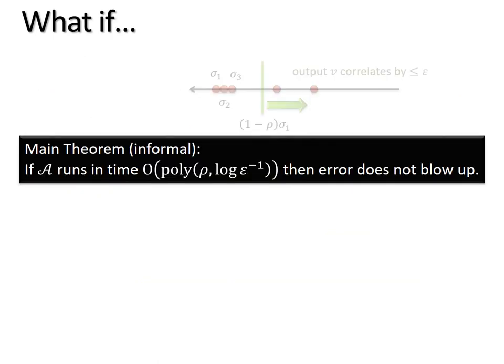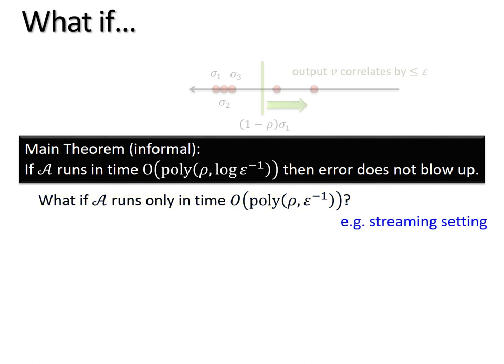Finally, let me ask, what if my favorite algorithm A runs only in a time that's polynomial with respect to 1/(ρε), but not poly logarithmic? This, by the way, is indeed the case in the streaming setting, because if you don't have the data matrix offline, you only have it coming one by one in a streaming setting, then you cannot hope to get a very accurate log 1/(ρε) dependence.